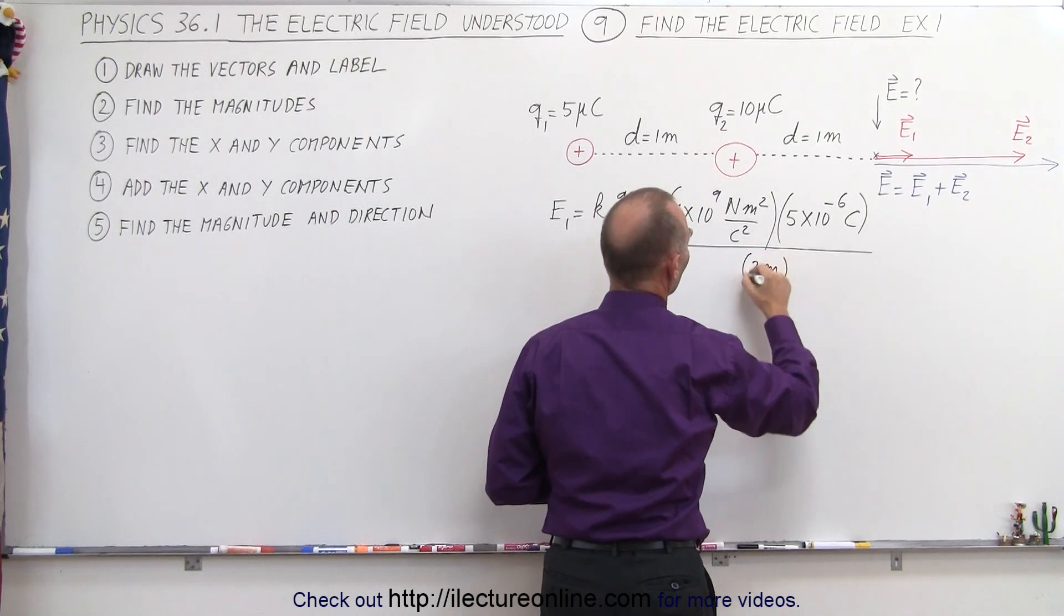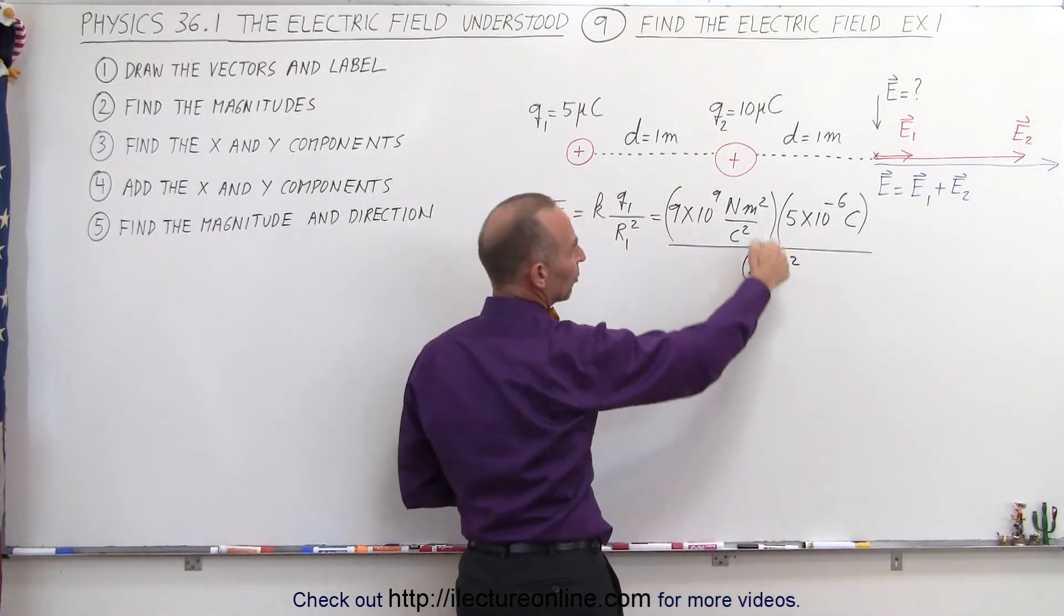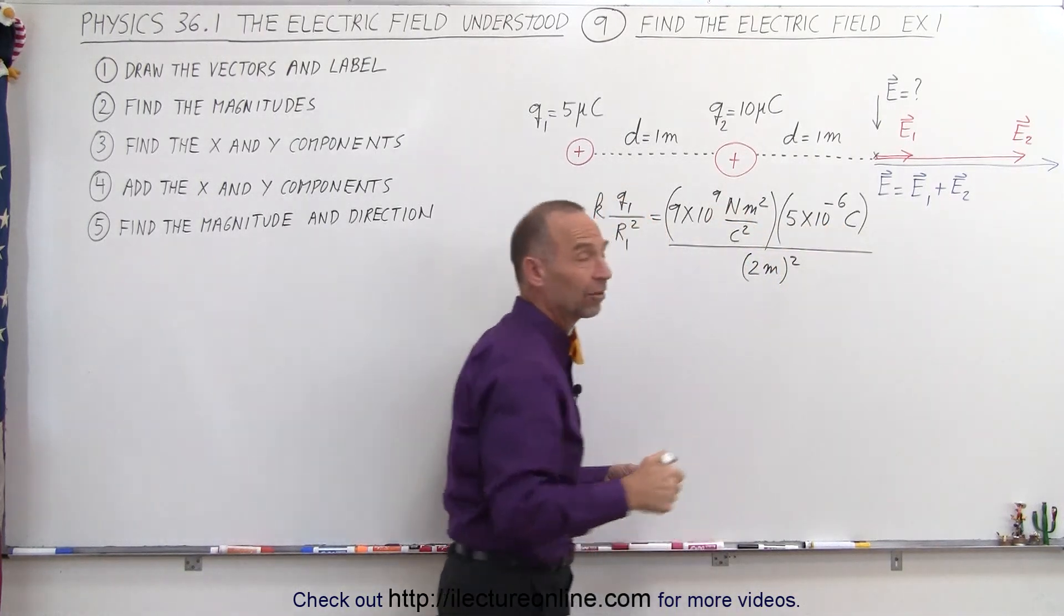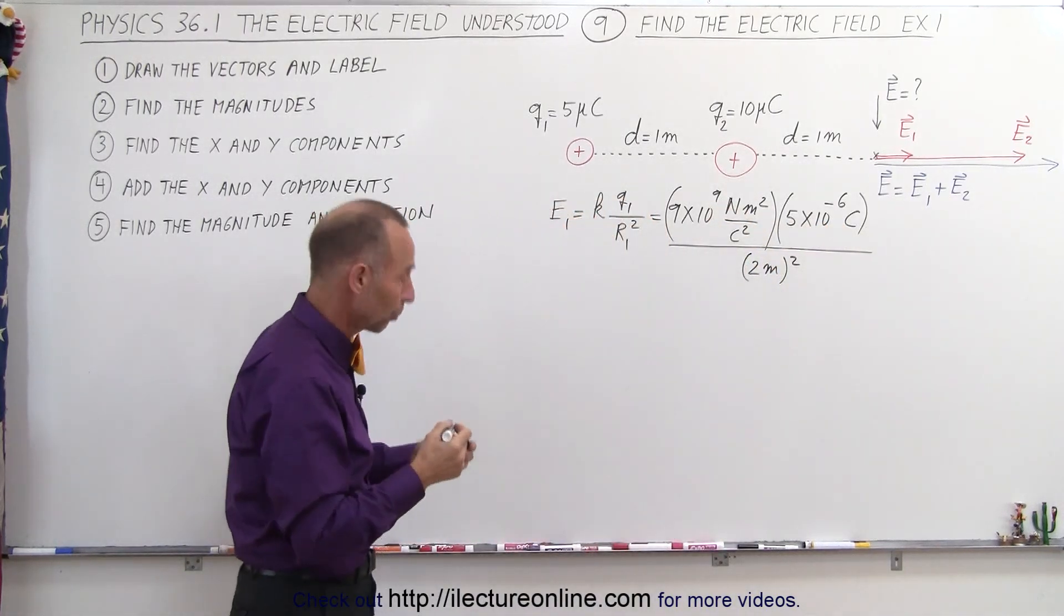So 2 meters and we have to square that. Notice the meter squares cancel out, one of the coulombs cancel out, and the newton doesn't cancel out. So the answer will be in newtons per coulomb.